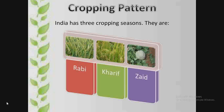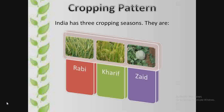Various types of food and fiber crops, vegetables, fruits and spices etc. constitute some of the important crops grown in our country. India has three cropping seasons. They are Rabi, Kharif and Zaid.